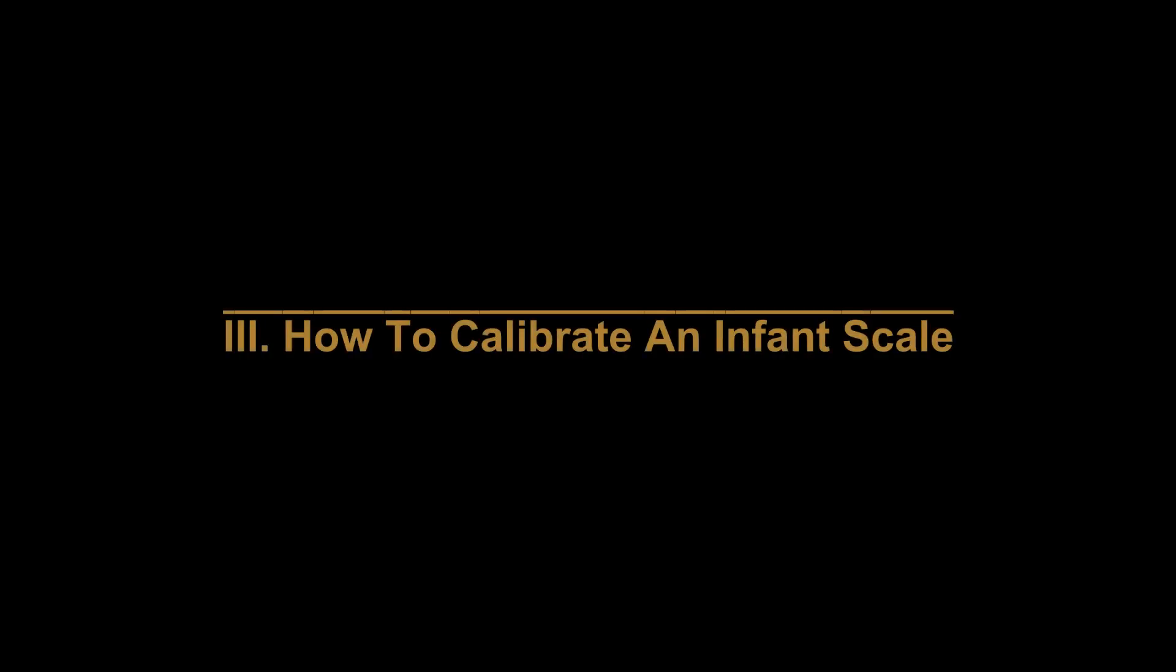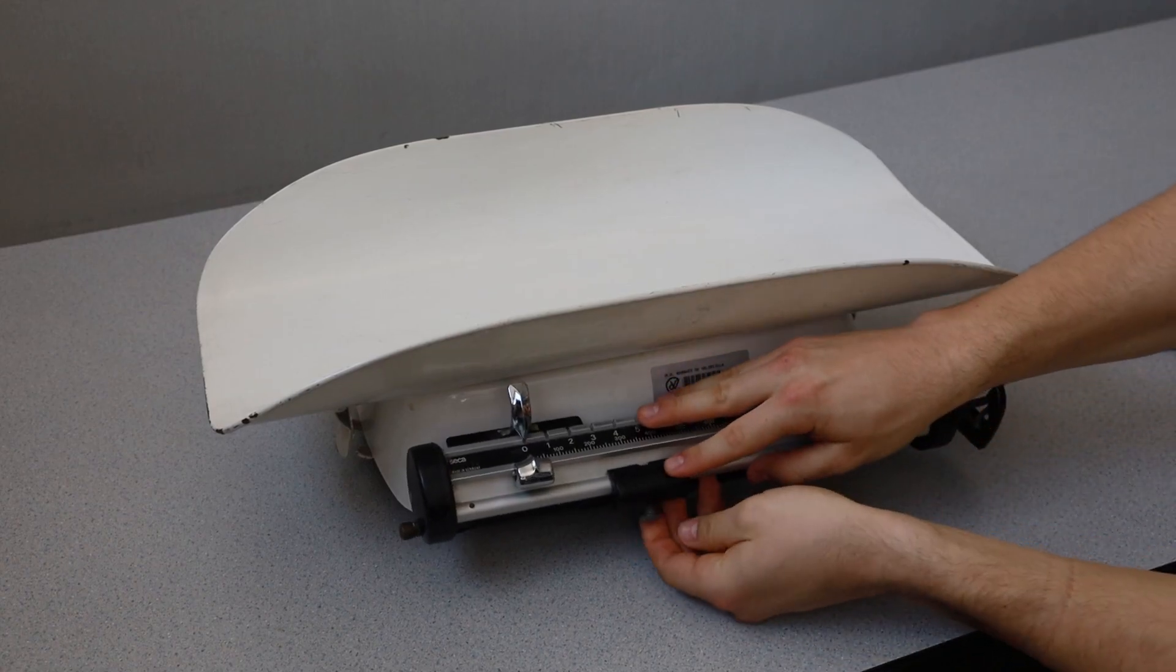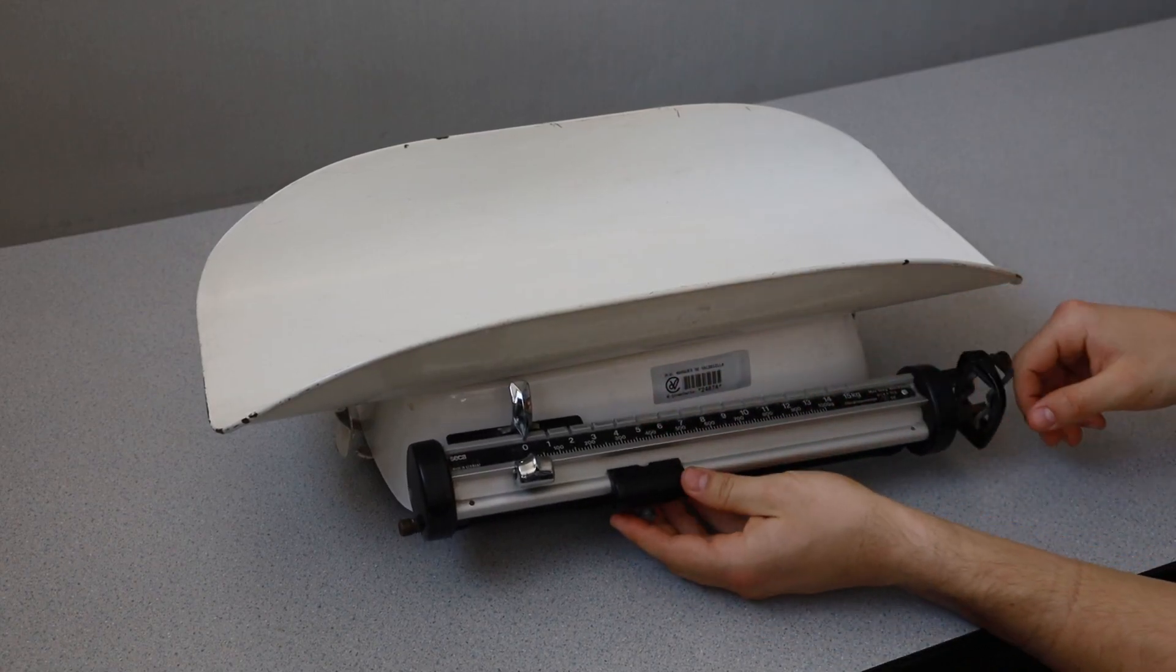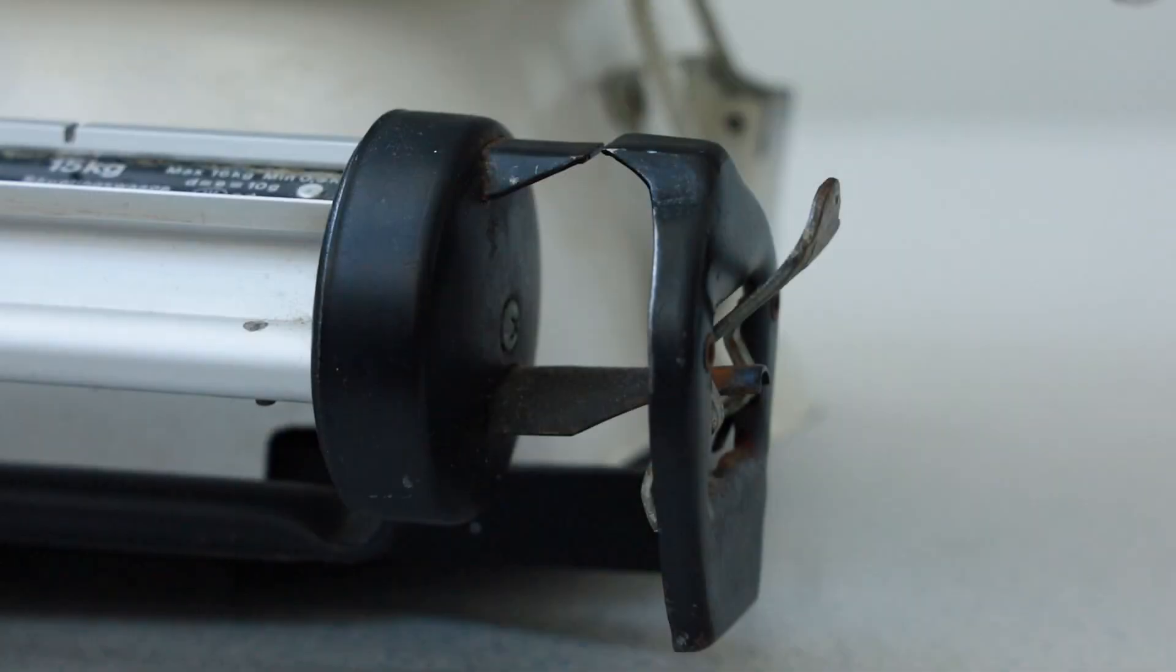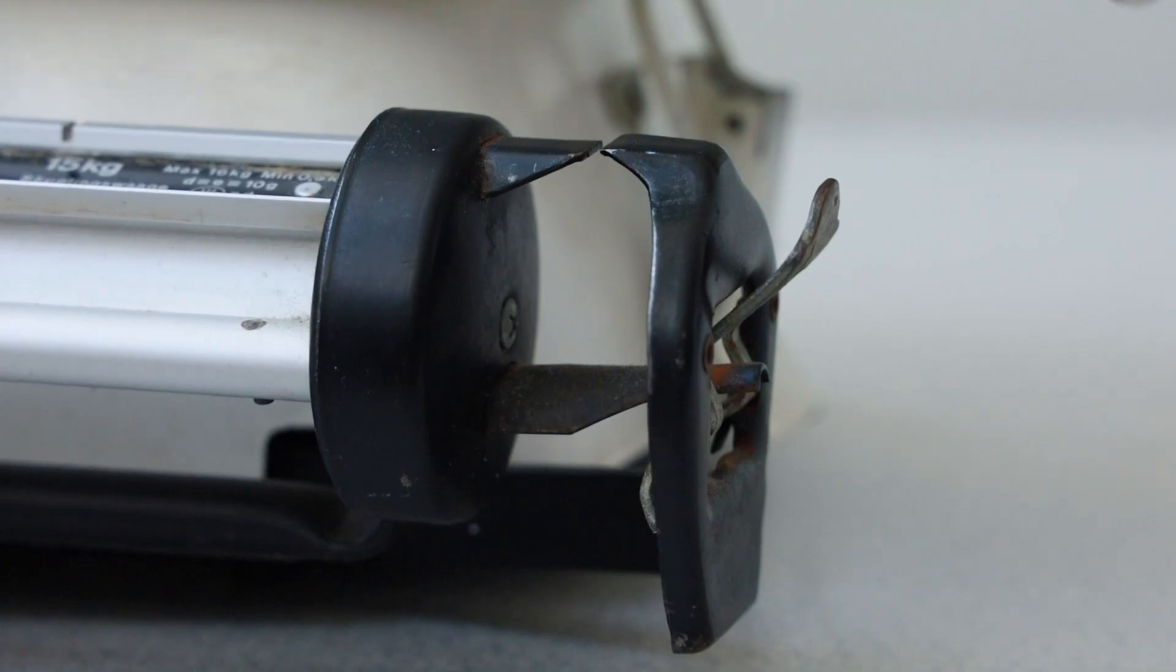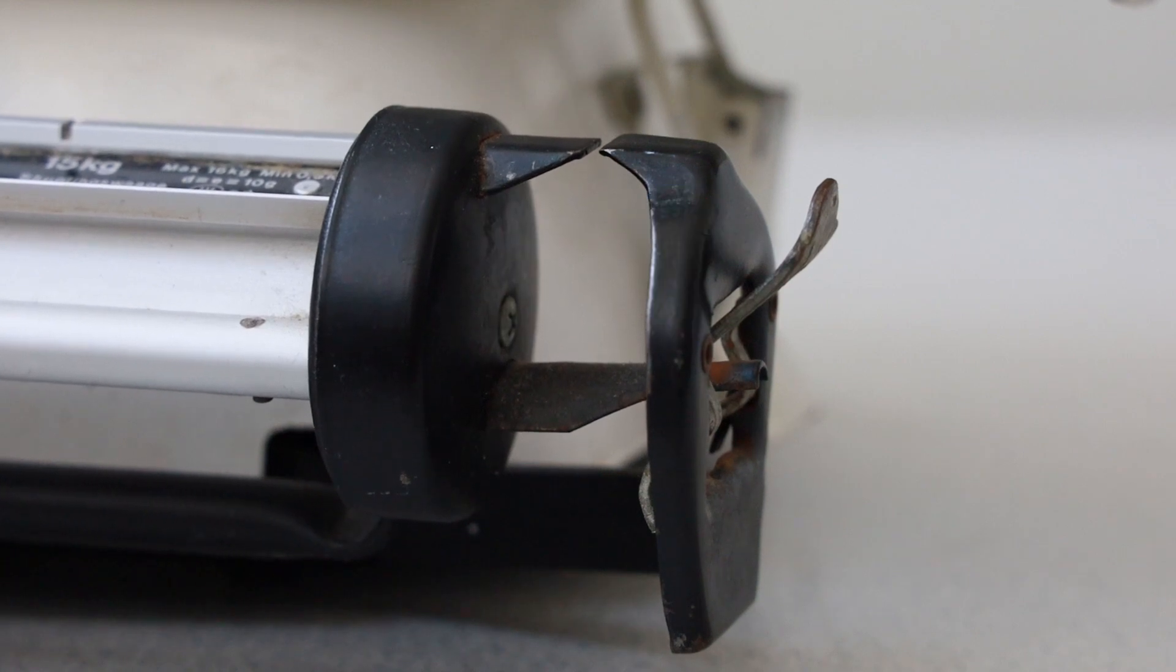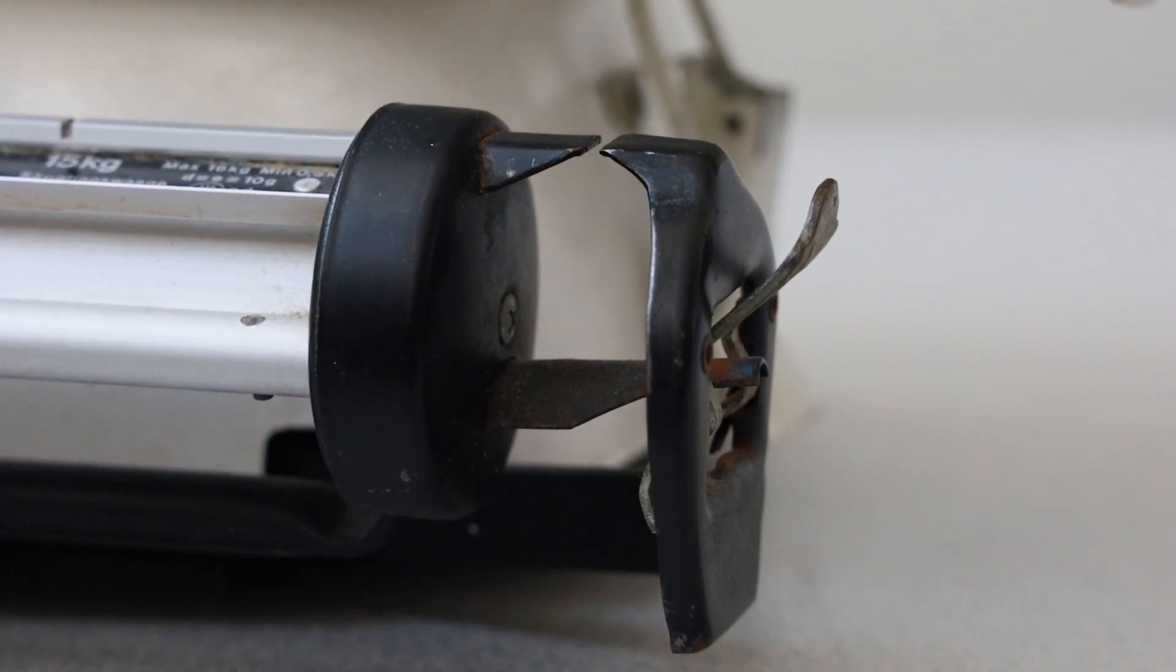We will now discuss calibrating the infant scale. Before the scale is used for weighing, it must be calibrated to ensure that the measurement of the baby is accurate. A scale is properly calibrated when the beam balance is level with no weight present on the weighing tray, or in other words, when the pointer and the counter pointer are aligned with each other without any weight on the scale.